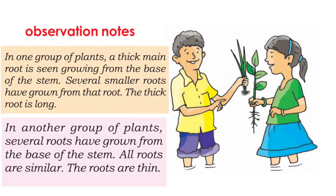The next plant is different. In that plant, several roots have grown from the base of the stem, not from one main root. All the roots are similar — the roots are thin. So in our environment there are two types of roots like this.